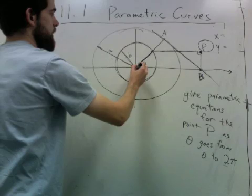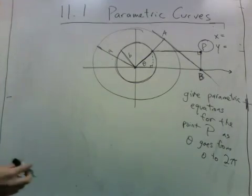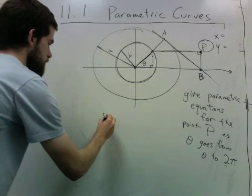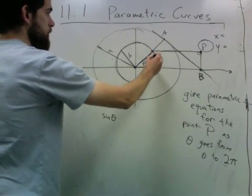So we know sine of theta is this height here divided by hypotenuse, which is b since we're on the circle.